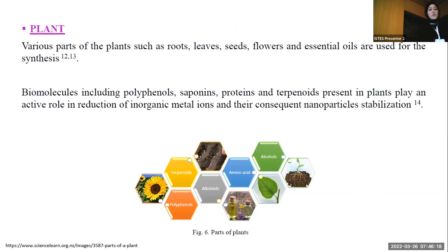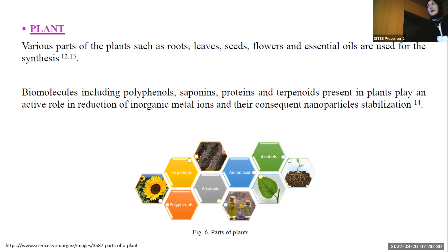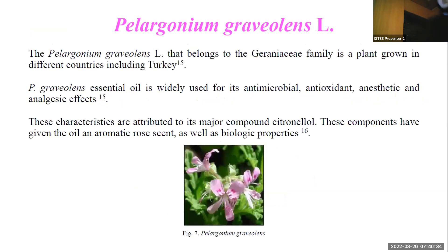Various parts of plants are used in green synthesis, such as roots, leaves, flowers, and essential oils. Phenolic and flavonoid compounds play a role in the reduction of metal ions and nanoparticle stabilization. Pelargonium graveolens grows in different countries, including Turkey. The oil's major compound is citronellol, and essential oil has been used in African traditional medicine to treat illness.